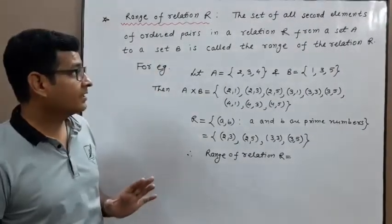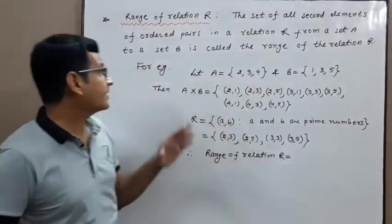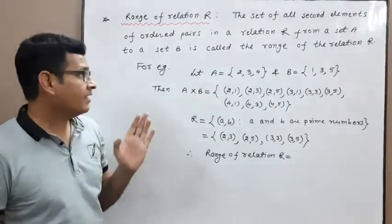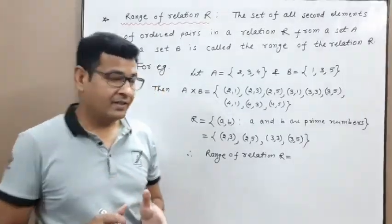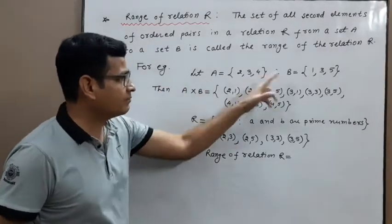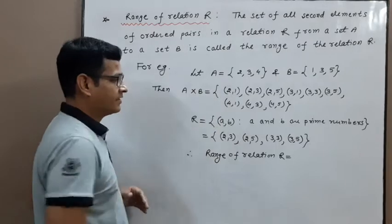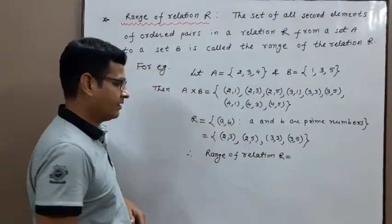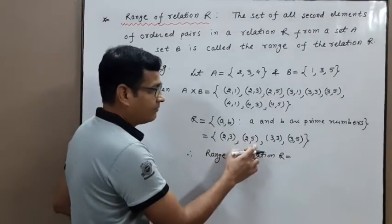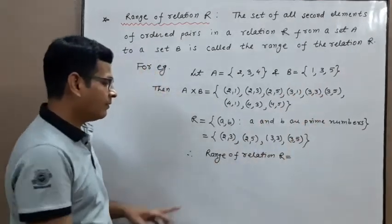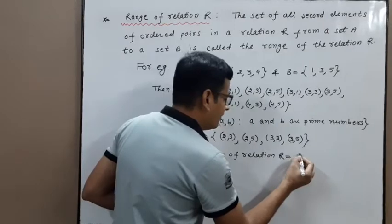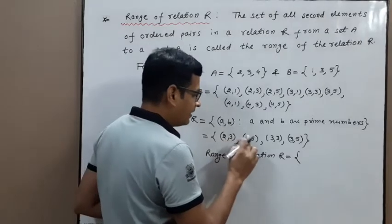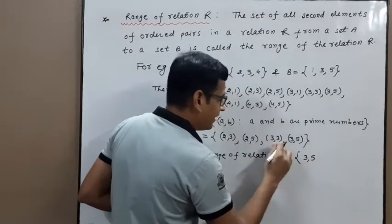Range of relation R: the set of all second elements of ordered pairs in a relation R from a set A to a set B is called the range of relation R. Using the same example with the triangle numbers relation, we get ordered pairs (2,3), (2,5), (3,3), (3,5). The second elements are 3, 5, 3, 3, 5 — but we write each only once. So the range is {3, 5}.